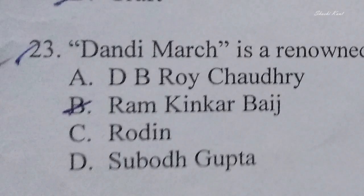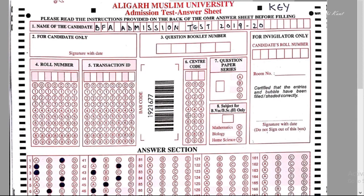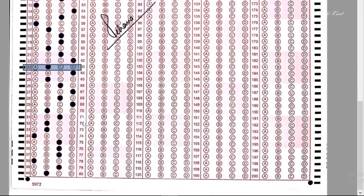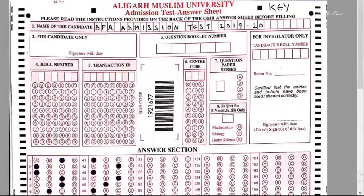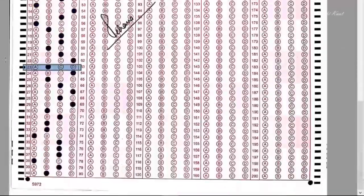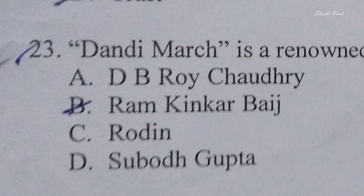यह question last year के AMU के entrance exam में भी आया था। जो university की तरफ से answer sheet बाद में जारी की गई, उसमें राम किंकर बैज बताया गया है, जो university ने बताया वो answer गलत है। Option A, D.B. Roy Chaudhary है, उनकी spelling में भी mistake है।